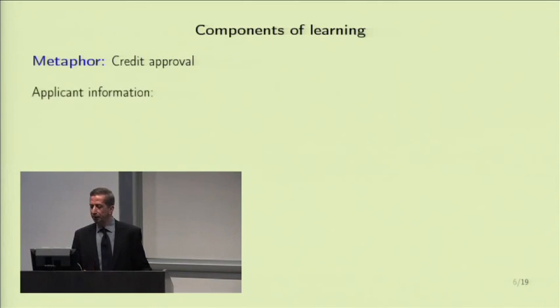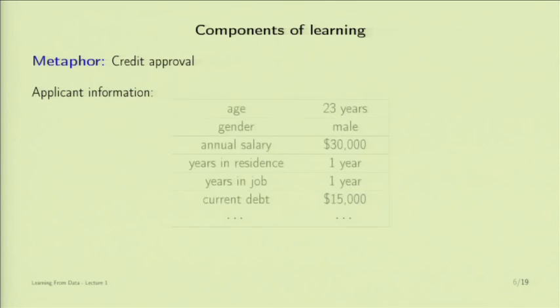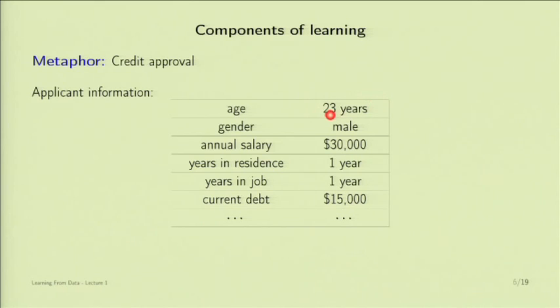What are the components here? First, you have the applicant information — age, gender, how much money you make, how much money you owe, and all kinds of fields believed to be related to credit worthiness. Pretty much like in the movie example, these fields are related to credit worthiness but don't necessarily uniquely determine it. The bank doesn't want a sure bet — they want to get the credit decision as reliable as possible. So they take this input and want to either approve the credit or deny it.